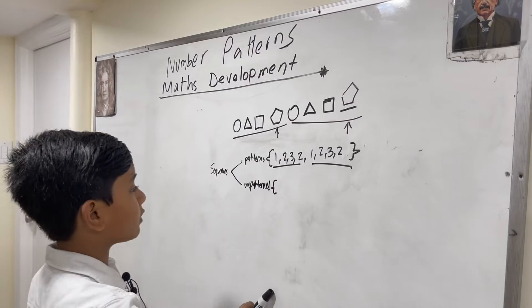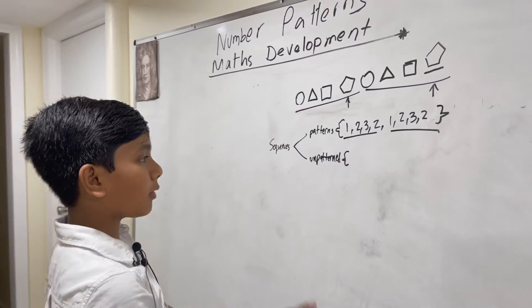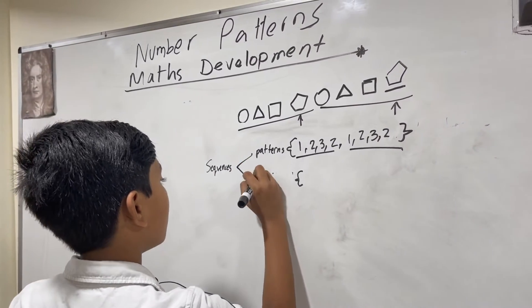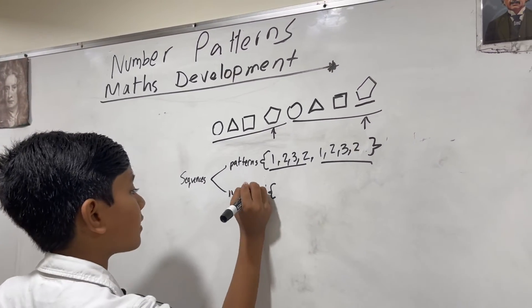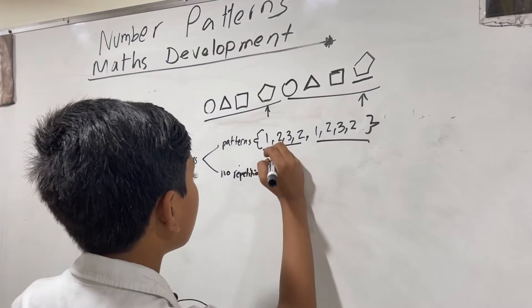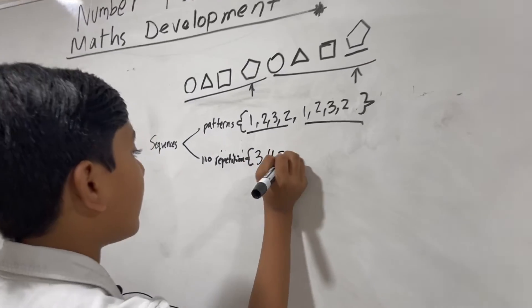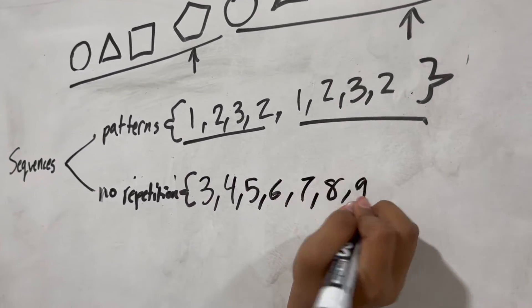By unpatterned, I don't mean completely disorganized, but I mean they don't repeat. So, no repetition. For example, that would be 3, 4, 5, 6, 7, 8, 9.